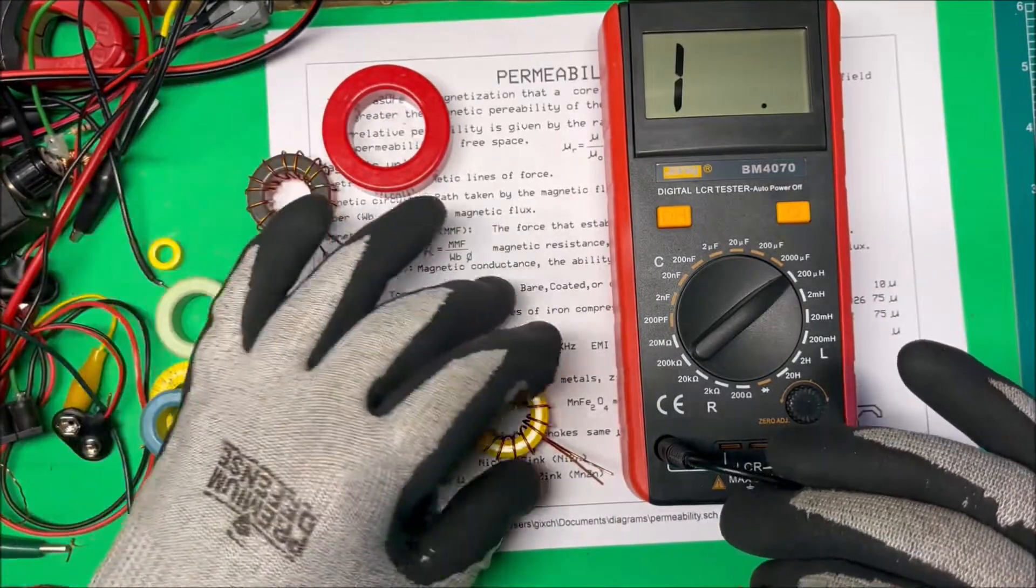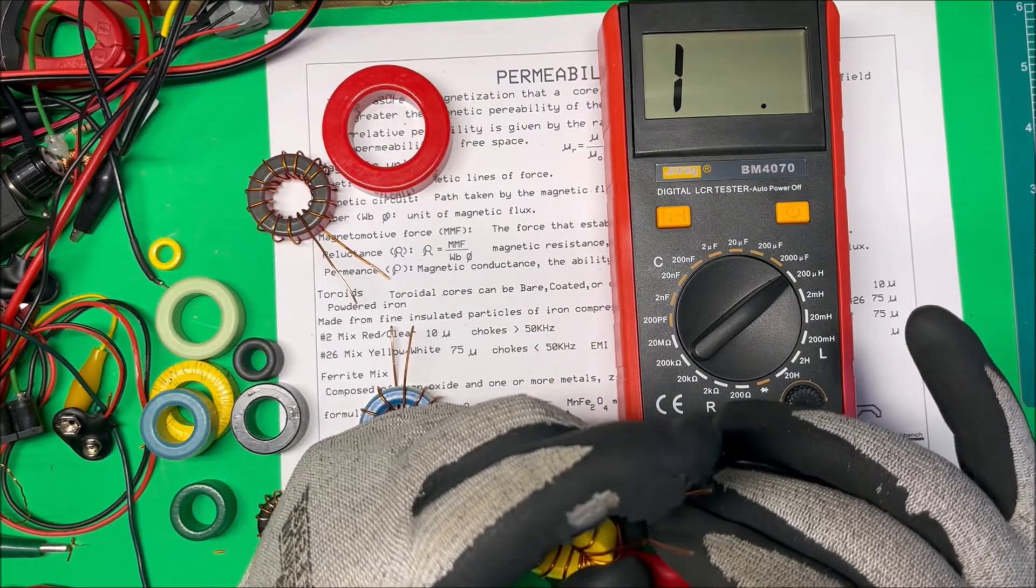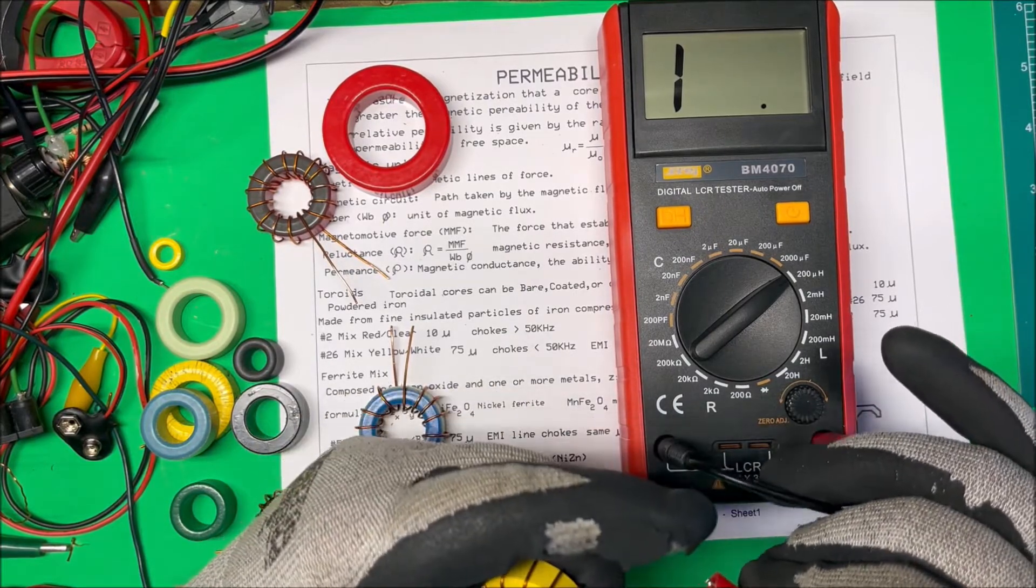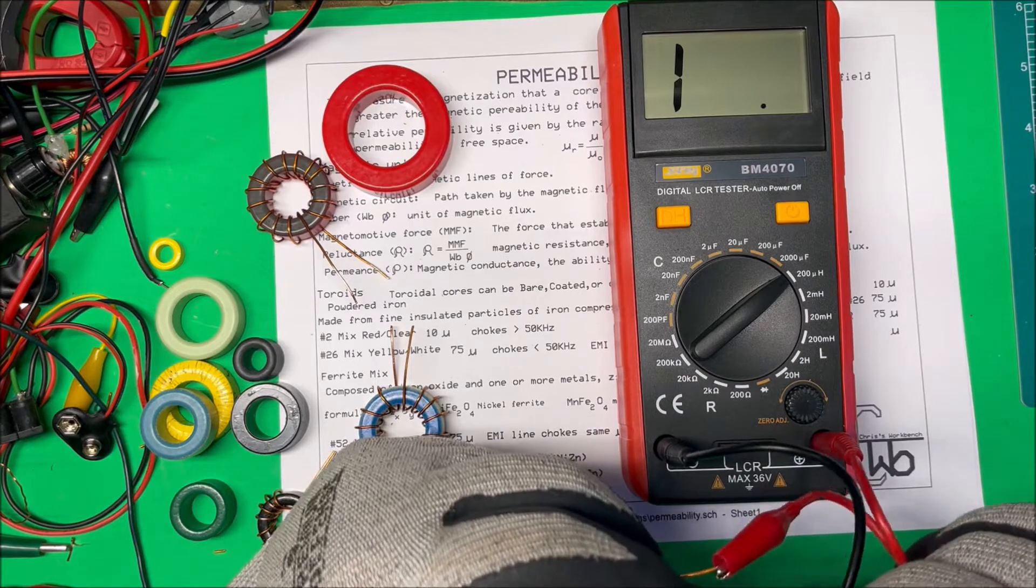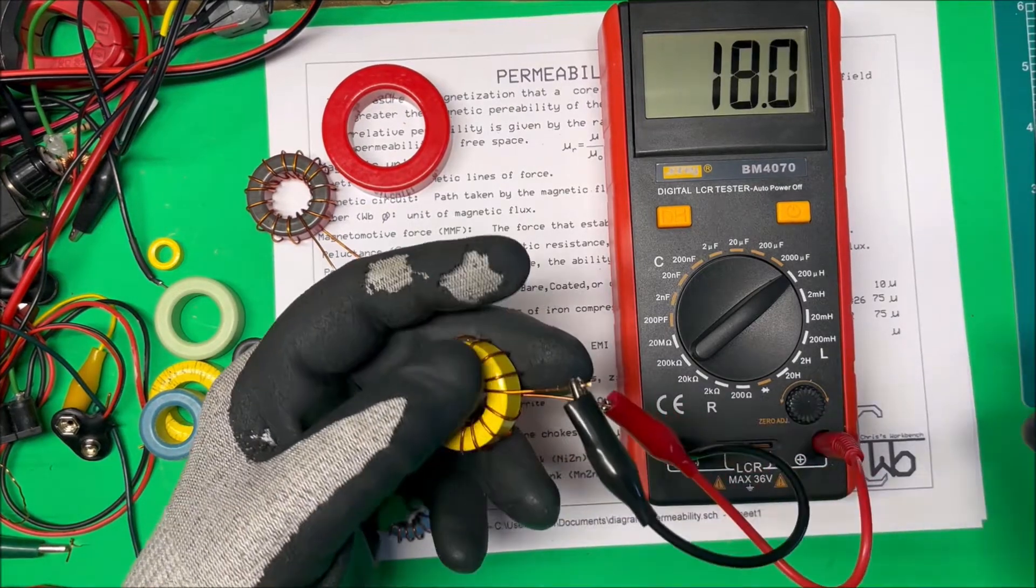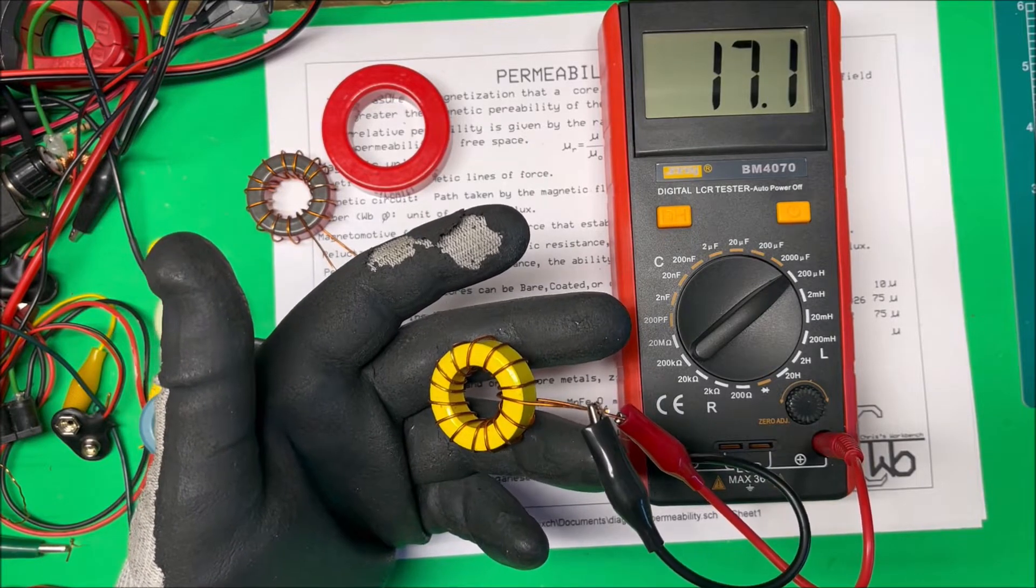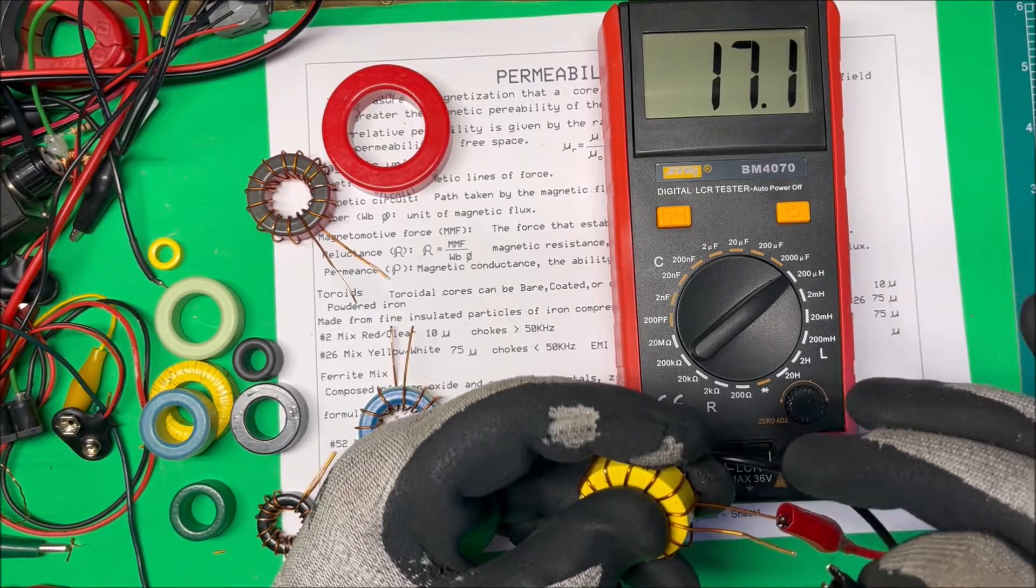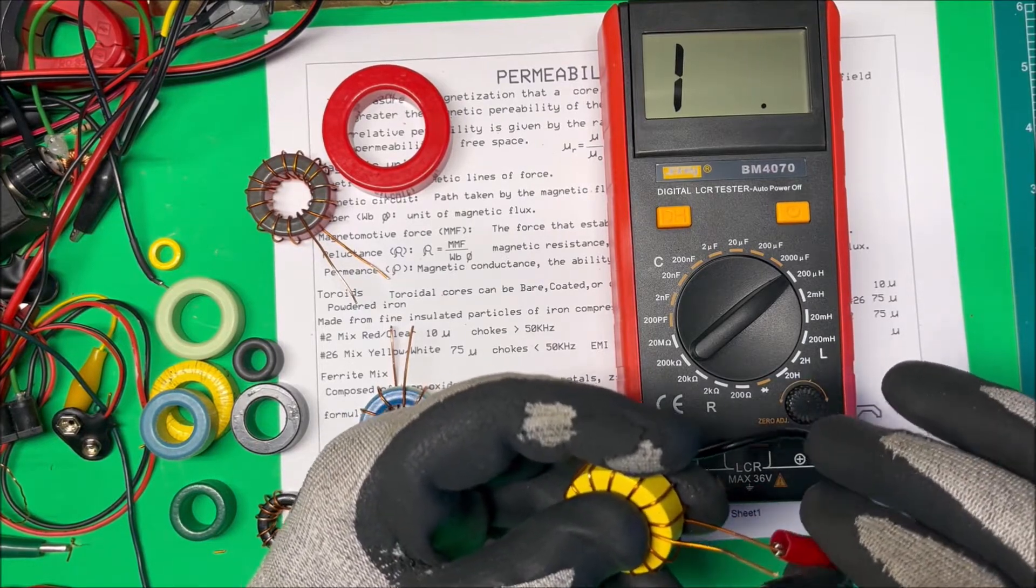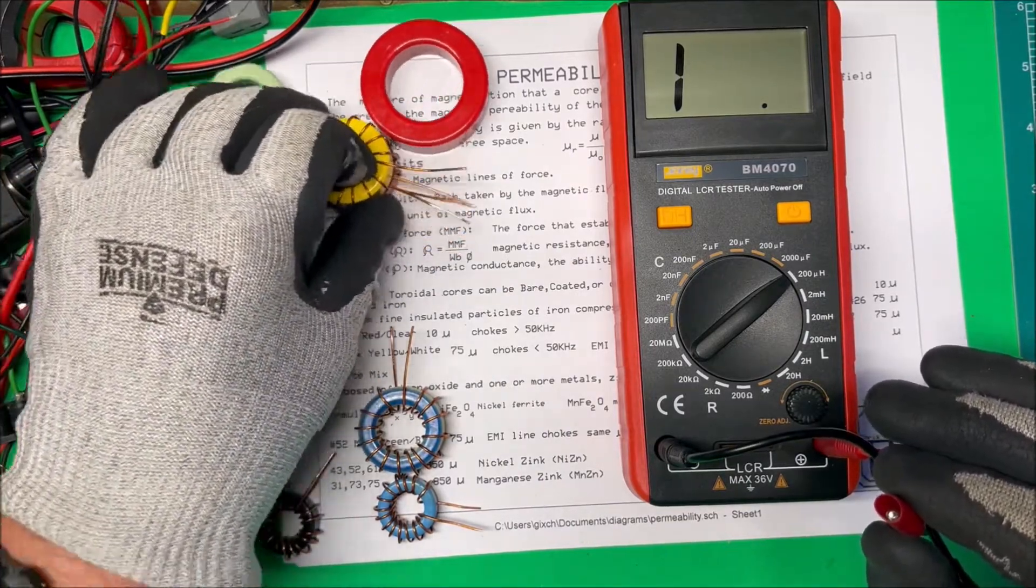So same size core, same amount of turns on it, higher permeability. We'll see what happens here. This is also a powdered iron core. We have 17.2 microhenries, quite a bit higher than that one. Same turns, same wire, just a different core material or different mix of that iron, powdered iron.